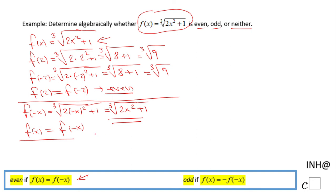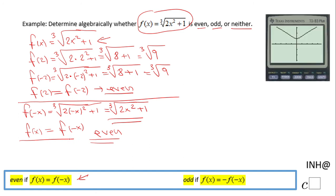We can also look at a graphical approach, which you see here. This is the graph of f(x), and we see a symmetry with respect to the y-axis, that means the function is even.